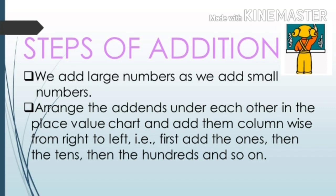Pehle hum addends ko place value chart mein arrange karenge. Aur uske baad ones place se column wise addition start karenge, left hand ki taraf. Yaani pehle aap ones place waale number ko jodhenge, uske baad tens place waale ko, phir hundreds place waale ko, phir thousands place waale ko aur is tarike se aage hum addition karenge.